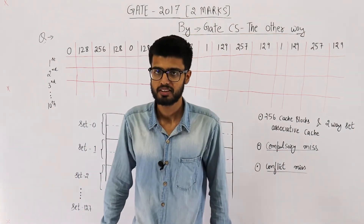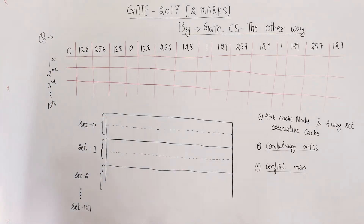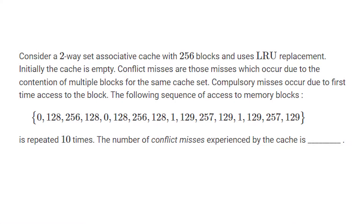Hello there students, welcome back. This question is from the GATE 2017 exam, set 2, and is for 2 marks. Let me read out the statement for you. Consider a two-way set associative cache with 256 blocks that uses LRU replacement. Initially the cache is empty. Conflict misses are those misses which occur due to the contention of multiple blocks for the same cache set. Compulsory misses occur due to first-time access to the block. The following sequence of accesses to memory blocks is repeated 10 times. The number of conflict misses experienced by the cache is blank.